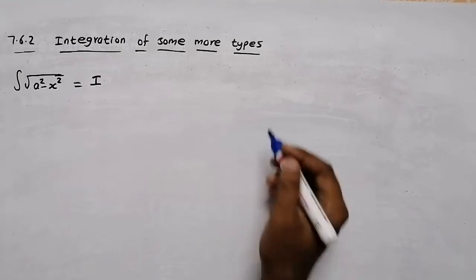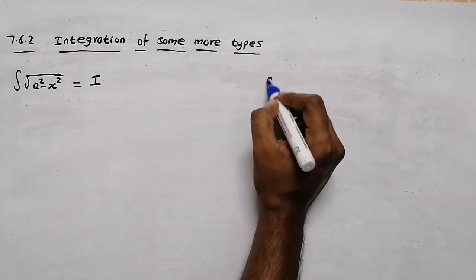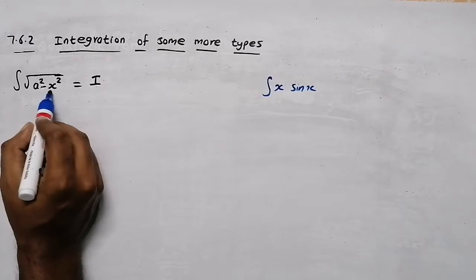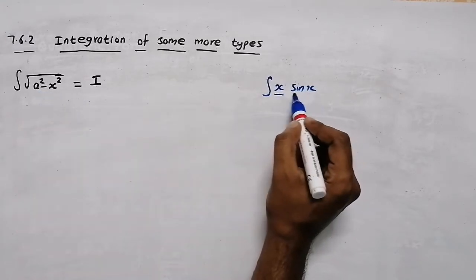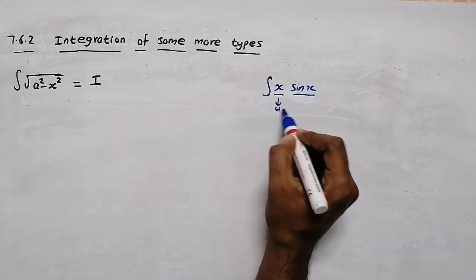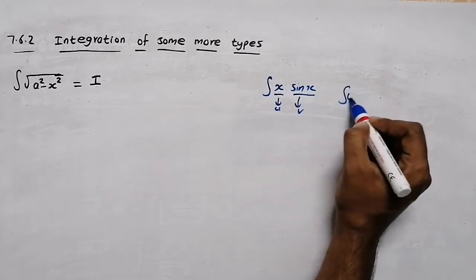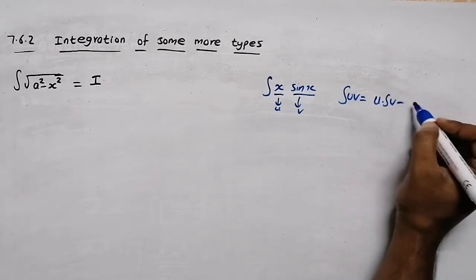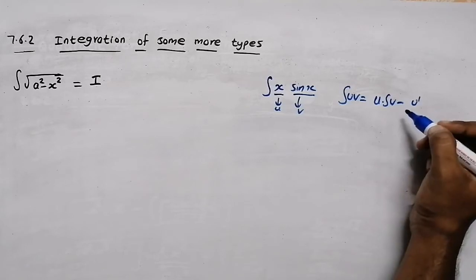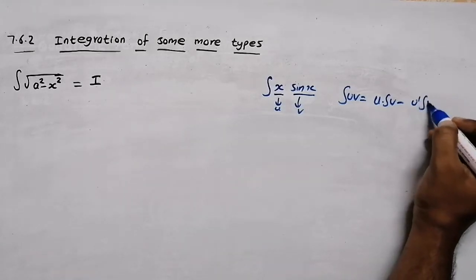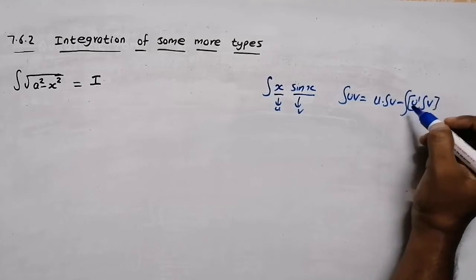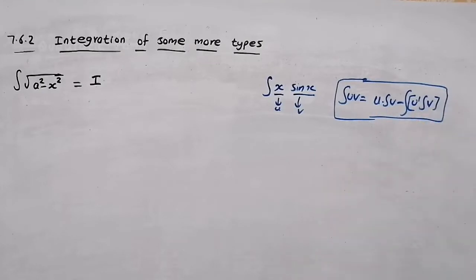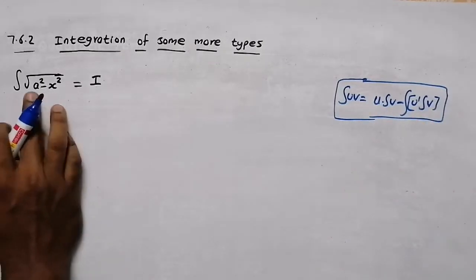We will talk about the formula. The formula involves x and sin x — it is important for both functions. We have to work with the functions. If we start with u1 and v1, and the integral of uv, the formula for integration by parts is: u times integral of v, minus u-dash times integral of v. That is the integration by parts formula.